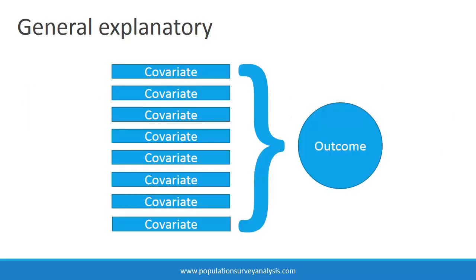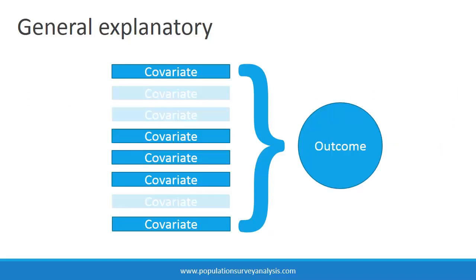The researcher develops a model with multiple factors that are potentially associated with the outcome, and narrows down which key factors are most important based on the magnitude, direction, and statistical significance of the associations.